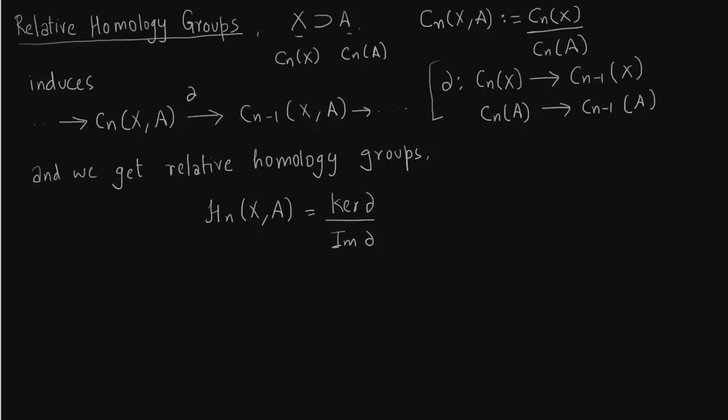So what are we trying to say? We are trying to say that yeah, delta square is 0 is obvious. So we are trying to say that H_n(X, A) is a homology of X modulo A.